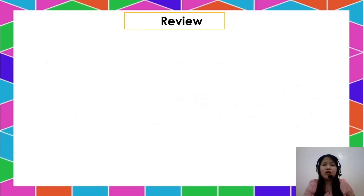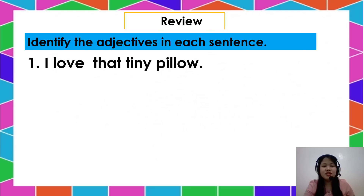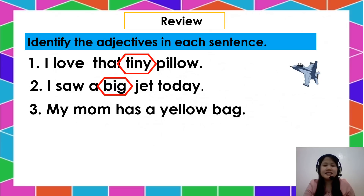Let us have our review from our previous lesson. Did you still remember it? Identify the adjectives in each sentence. Number one: I love the tiny pillow. What is the adjective or describing word here? Very good! It is tiny. Number two: I saw a big jet today. What is the describing word or the adjective used in the sentence? Very good! It is big! Number three: My mom has a yellow bag. Can you tell me which is the adjective here? Very good! It is yellow.